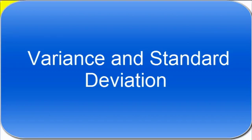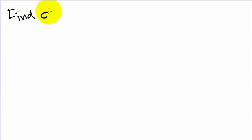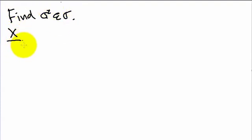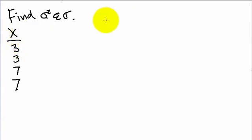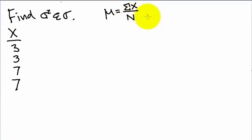Let's take a look at how to find the variance and the standard deviation. We'll find variance and standard deviation using a small example. Let x equal to 3, 3, 7, and 7. We have a variable x which is equal to these four scores. The first thing we need to do is find the mean, and since this is a population we're going to use the formula for the population mean, equal to the sum of x over n.